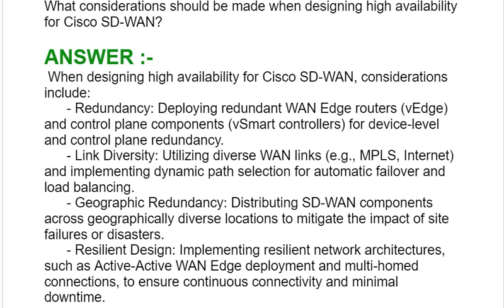Next point is geographic redundancy: distributing SD-WAN components across geographically diverse locations to mitigate the impact of site failures or disasters. Next point is resilient design: implementing resilient network architecture such as Active-Active WAN edge deployment and multi-homed connections to ensure continuous connectivity and minimal downtime.